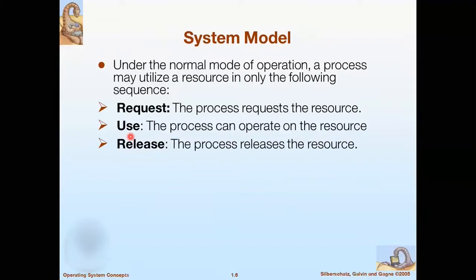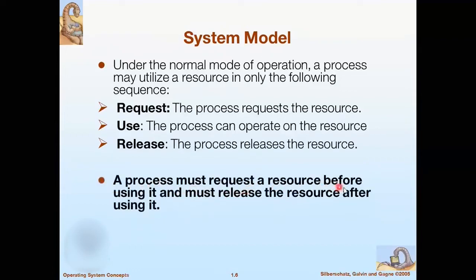If the resource is being used by another process, then the requesting process must wait until it can acquire the resource. Otherwise, if a process already gets its desired resource, it can operate on that resource. The third step is release — the process releases the resource after using it. It is not the case that a process can hold a resource for an infinite amount of time. So each process must request a resource from the operating system, use it if granted, and must release the resource at the end.